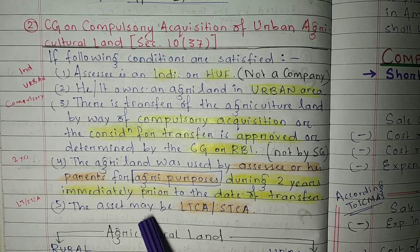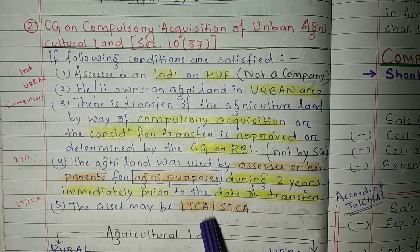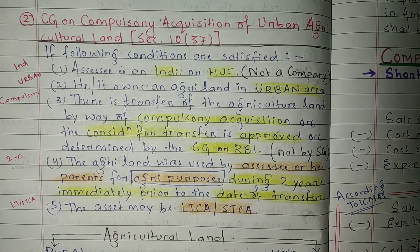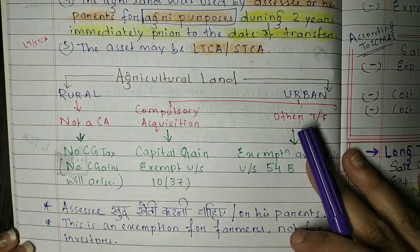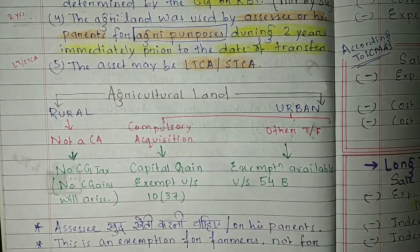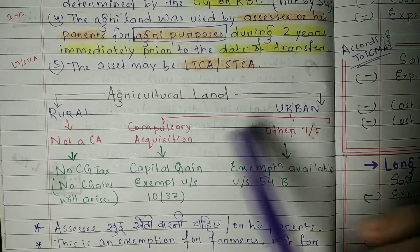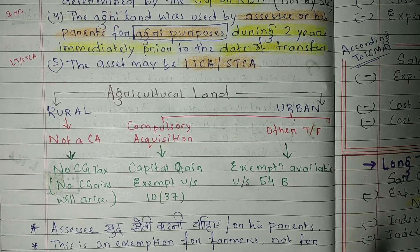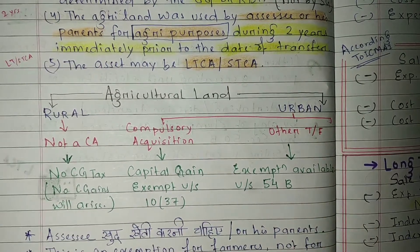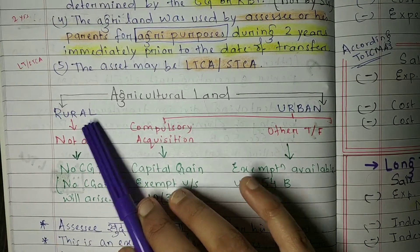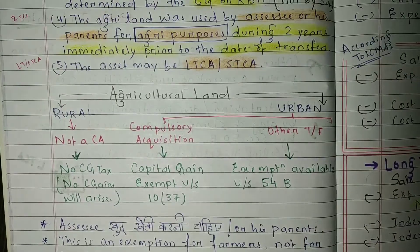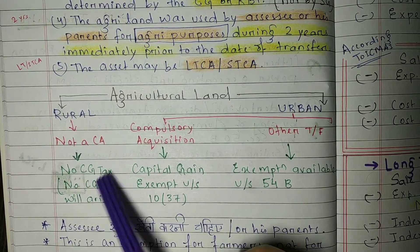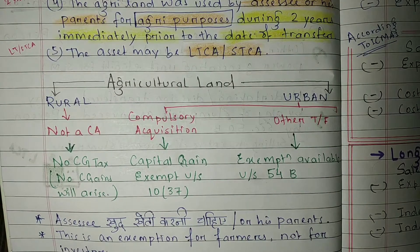Fifth condition: the asset may be a long-term capital asset or a short-term capital asset — there is no issue with that. Now let us look at a chart. If you have agricultural land in a rural area, it is not a capital asset at all, so obviously capital gain does not arise and capital gains tax does not need to be paid.